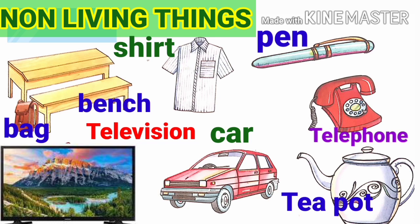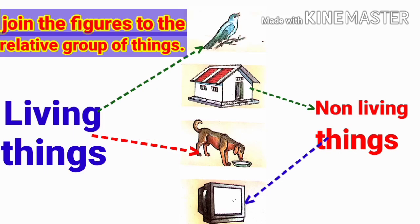Non-living things: things which have no life are called non-living things. Look at this picture. What are there in the picture? Shirt, pen, bag, bench, television, car, telephone, teapot. These are non-living things.